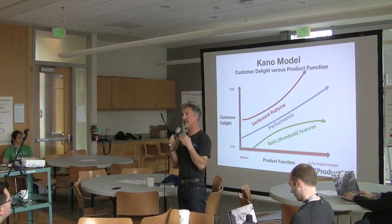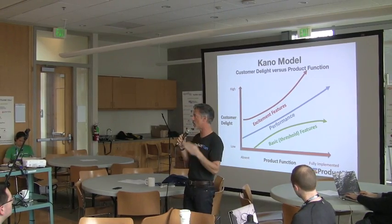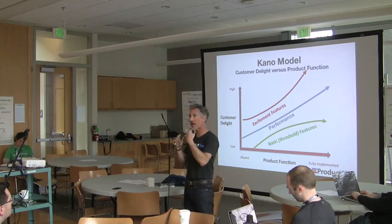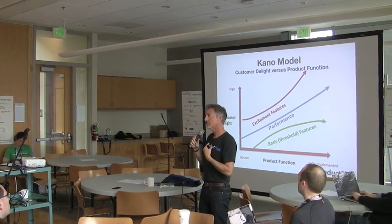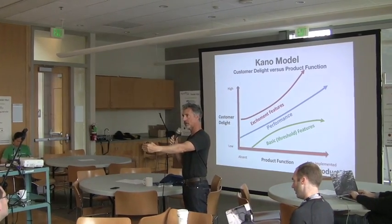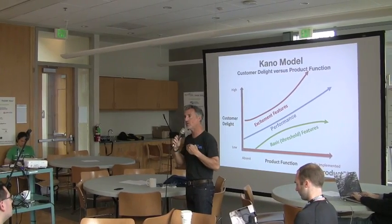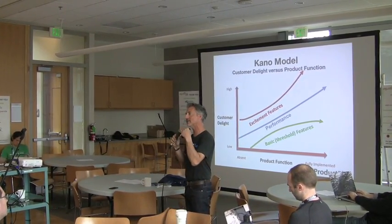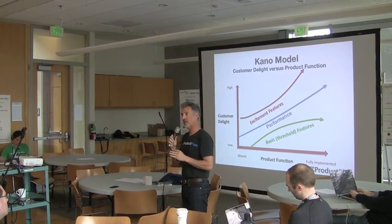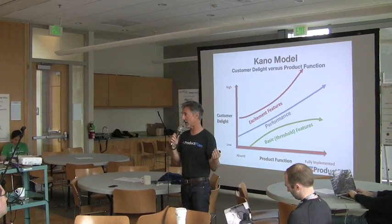Then there are excitement features. Excitement features are interesting because customers may not know that they want them to begin with. Your job as a product manager is to understand the customer problem you're trying to solve and then solve it in a unique way. If you find these little excitement features and build them into the product, you're going to get a disproportionate amount of customer delight out of it.